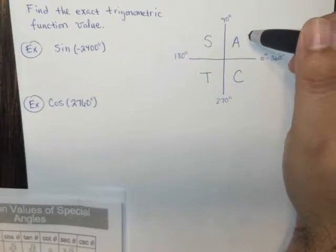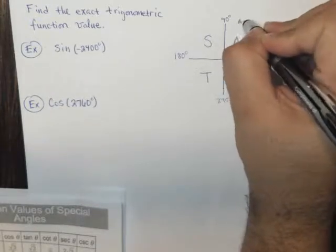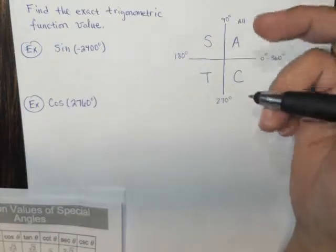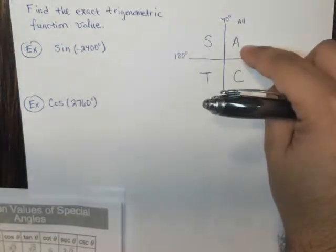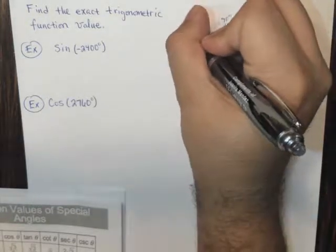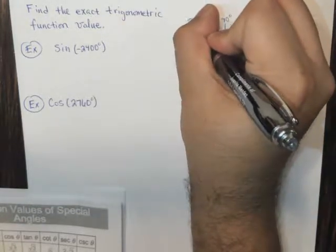In this quadrant, all of the functions, sine, cosine, tangent, and their cousins, cotangent, cosecant, all of them are positive. Here, sine and its cousin, cosecant, are positive.